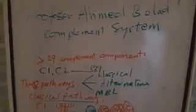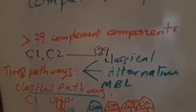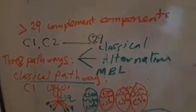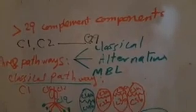Today I'm going to talk about the complement system. As you may know, there are more than 29 complement components circulating in inactive form, from C1 to C29. There are three pathways of the complement: the classical, the alternative, and the Mannose-Binding Lectin pathway.